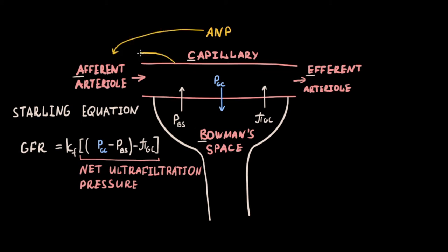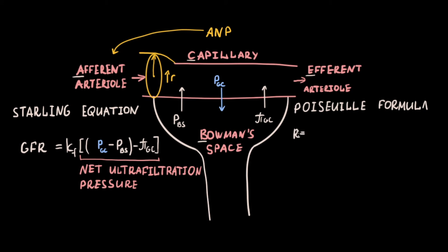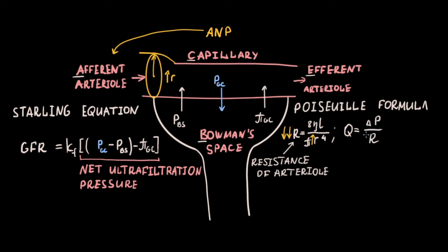ANP stimulates dilatation of afferent renal arterioles, increasing their radius. By the Poiseuille formula — which contains viscosity, length, and radius to the power of 4 — increasing arteriolar radius extremely decreases arteriolar resistance. By the blood flow formula (pressure difference divided by vascular resistance), decreasing resistance increases blood flow. Since blood flow equals volume divided by time, increased flow raises the volume of blood in the capillary per unit time, thereby increasing hydrostatic capillary pressure, net ultrafiltration pressure, and ultimately glomerular filtration rate.